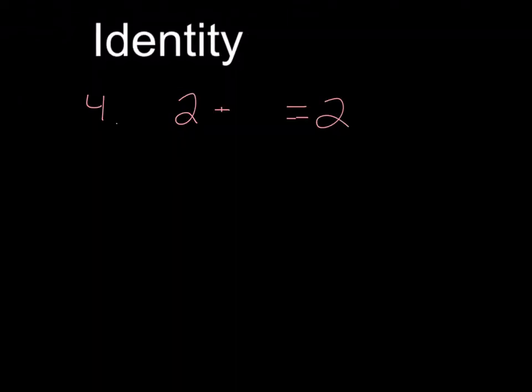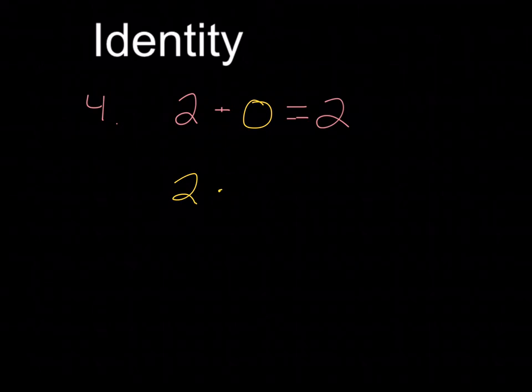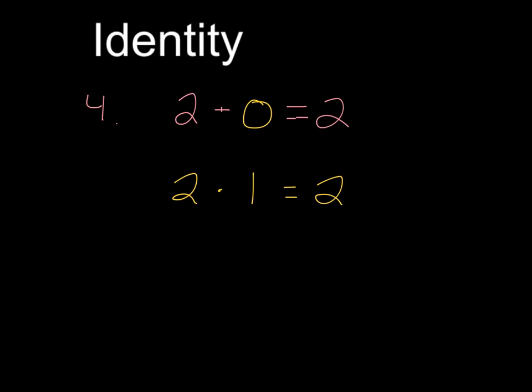And finally, the identity property. We remember that's where, for addition, what do we add to a number so that it equals itself? Well, 2 plus 0 is equal to 2. In multiplication, what do we multiply so that it equals itself? Well, 2 times 1 is equal to 2. Just remember, the identity is where the answer is equal to the original number that we had. Alright, there's your video — have a good day.